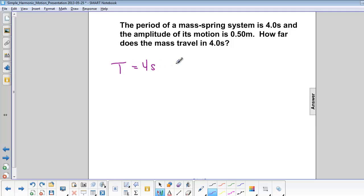Period is 4 seconds, the amplitude is 0.5 meters, and the time is 4 seconds. So we're looking for how far it travels in one cycle.